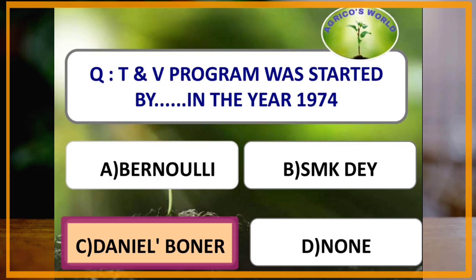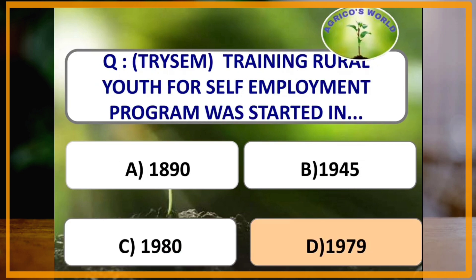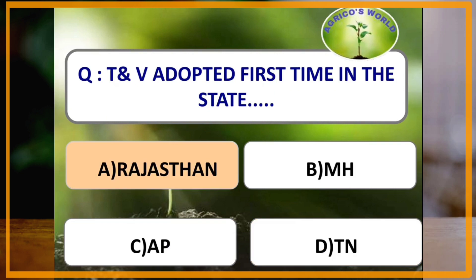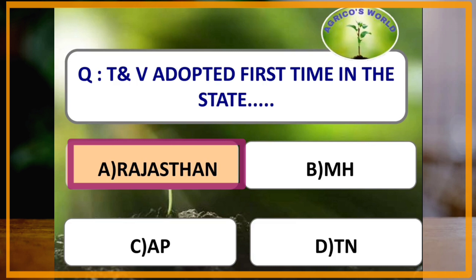TNV Program was started by Daniel Boner. Training of Rural Youth for Self-Employment (TRYSEM) program was started on 15th August in the year 1979. TNV was adopted for the first time in which state? TNV was adopted first time in Rajasthan.